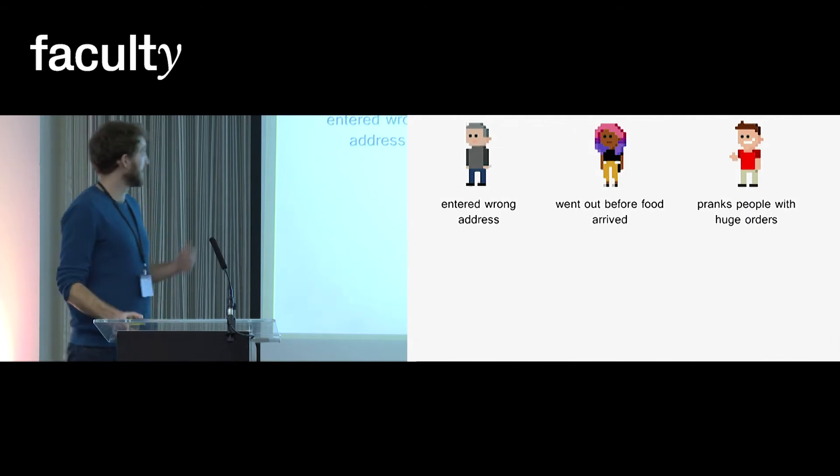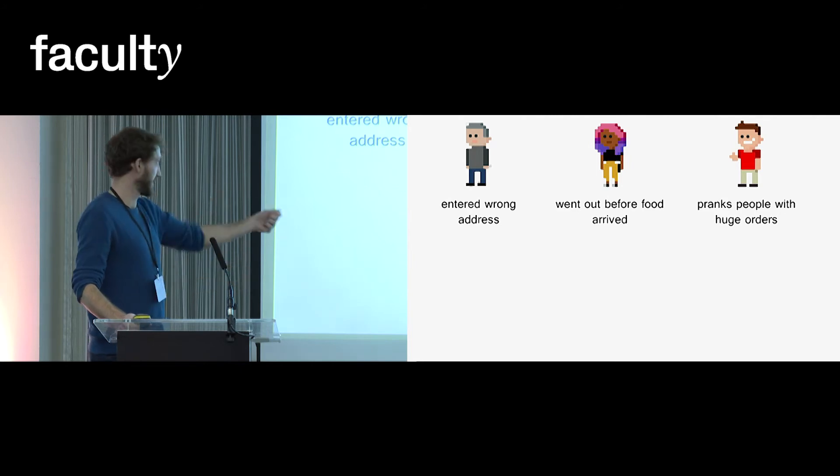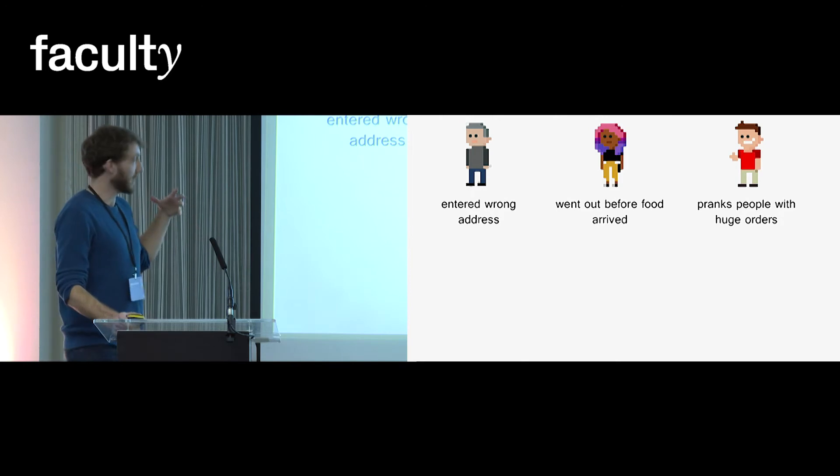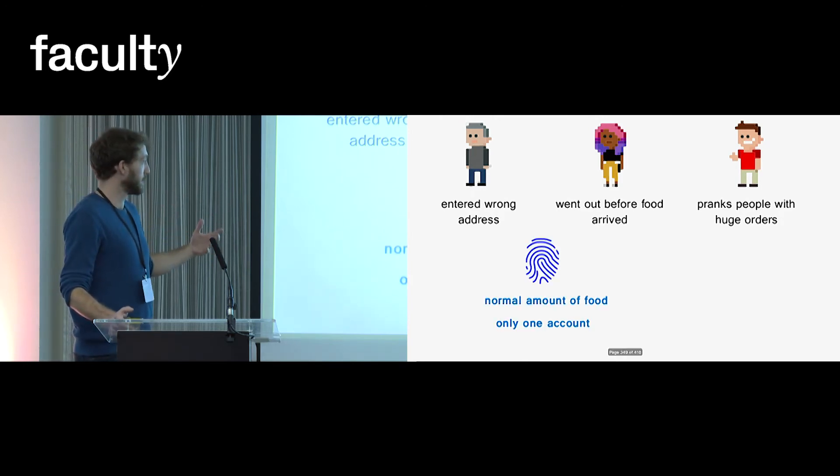Now, in order to think about this, what I did is I looked at the fingerprints that each of these three customers, these three hypothetical customers, made in the data. So Alf and Heather, they made their undeliverable orders accidentally, right? So I hypothesized that maybe they would have ordered a normal amount of food because they weren't intending on making a bad order. And we can also hypothesize that they probably only had one account with Just Eat.